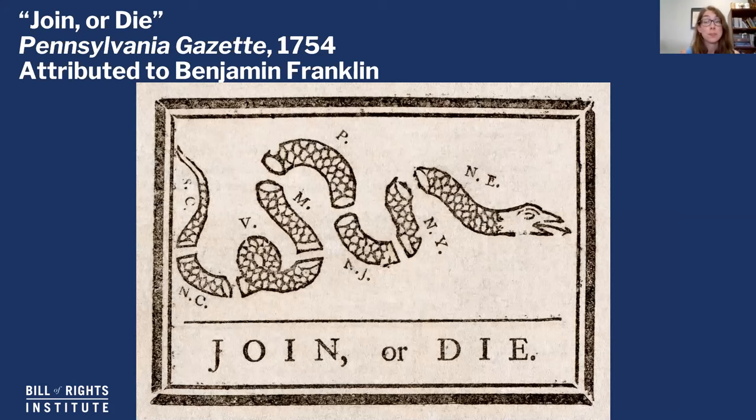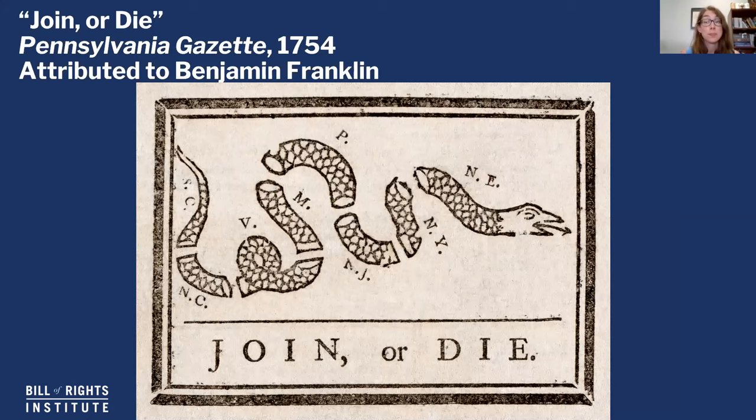So here are some basics. Usually when you encounter a historic image, you're given some sort of source line. Here I have the title, "Join or Die." I have where it was published — the Pennsylvania Gazette in 1754. So the Pennsylvania Gazette — I'm assuming Gazette is a newspaper — and it's attributed to Benjamin Franklin, which is a name you hear a lot in American history.